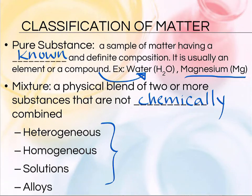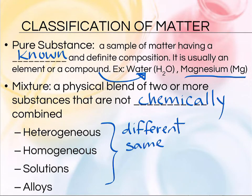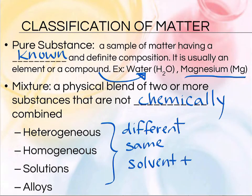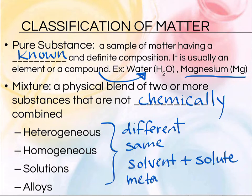A heterogeneous mixture is where you can see the different layers of your mixture. A homogeneous mixture is where they all look the same throughout, like Kool-Aid — it all looks the same. Or a solution where you have a solvent that dissolves a solute. Or we may be looking at an alloy where we have a mixture of two different metals that combine so thoroughly that you can't really tell them apart.